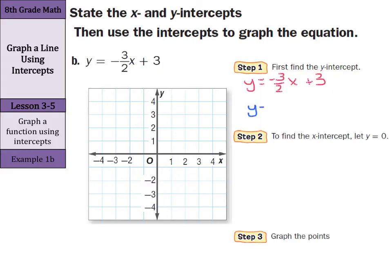So the y-intercept is 3, meaning this is at (0, 3). So (0, 3) is right there. There's my y-intercept.